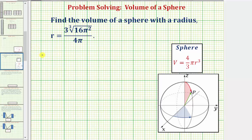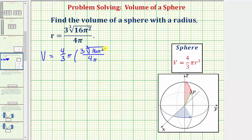So in our case, the volume V is equal to four-thirds pi times, for r cubed, we would have three times the cube root of 16 pi squared, divided by four pi cubed.